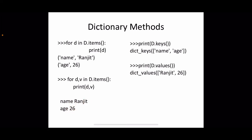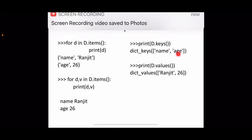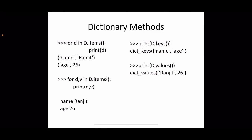The keys() method — d.keys() — returns all keys in the dictionary as a list, for example ['name', 'age']. The values() method — d.values() — returns all values as a list, for example ['Renjith', 26].